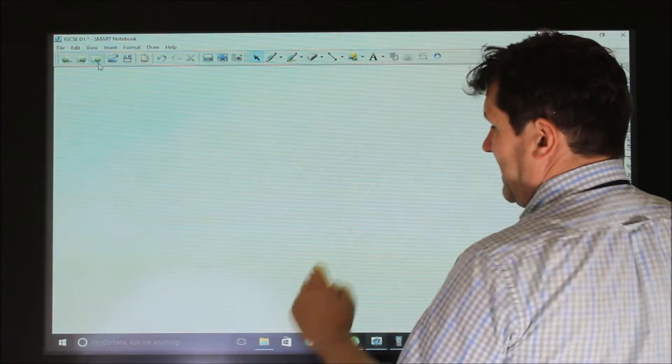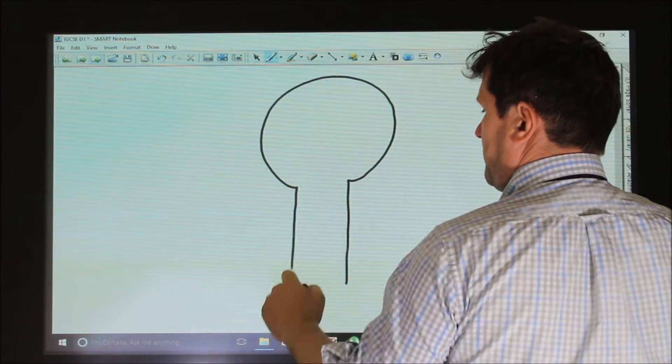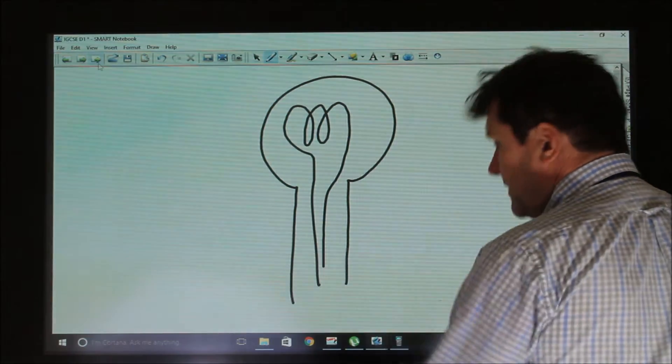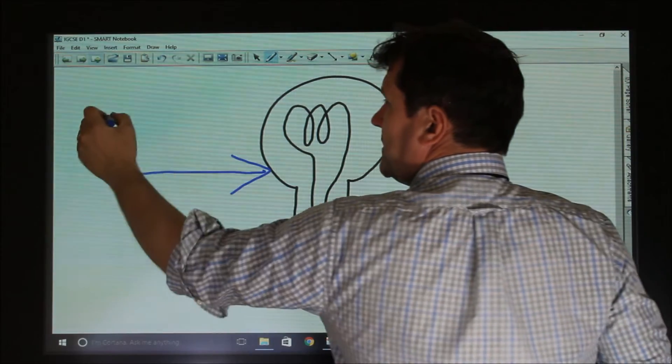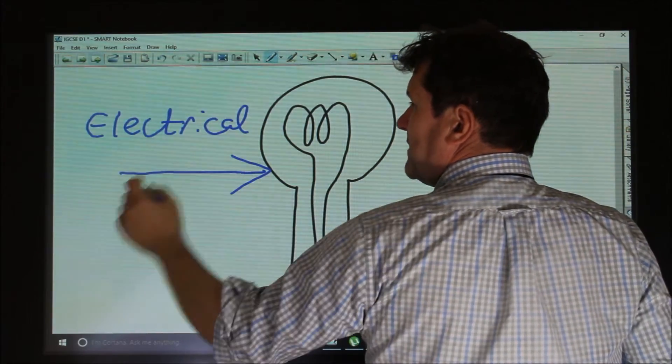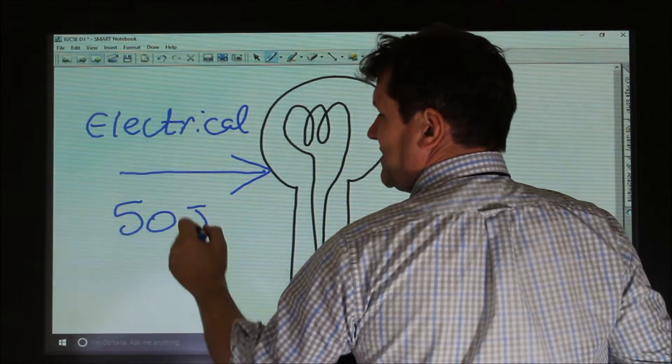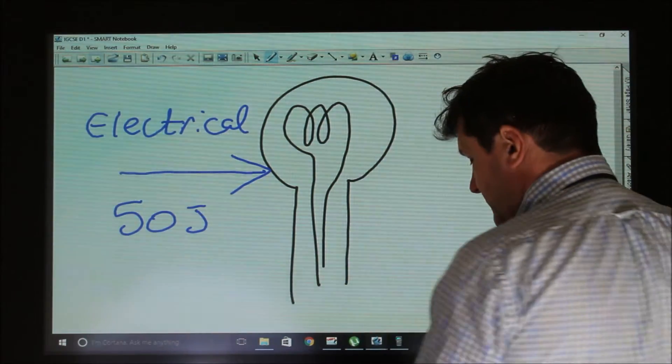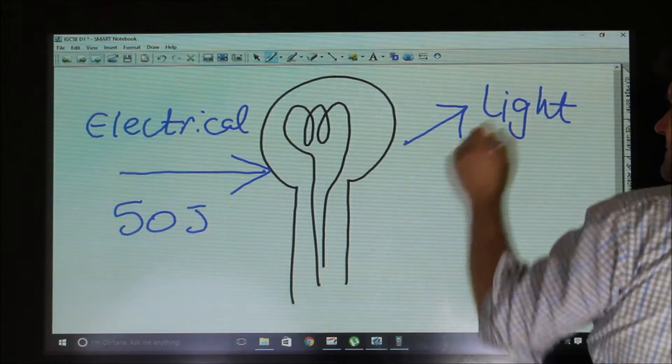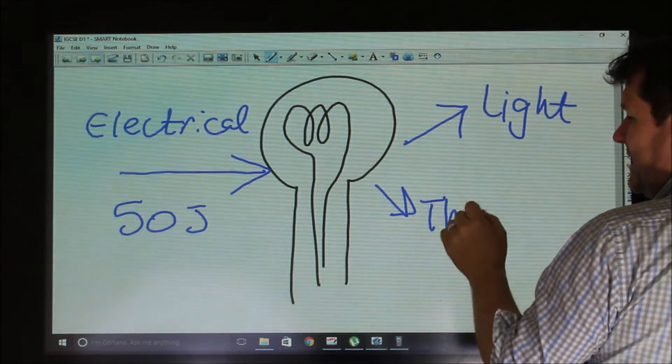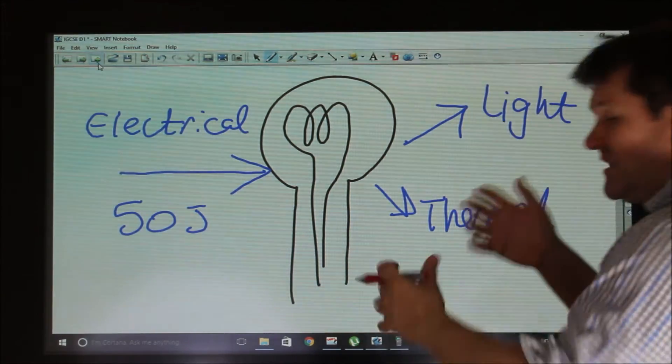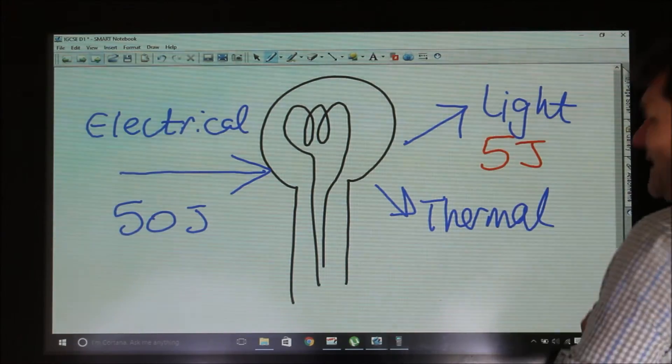So if we go back to the example of a light bulb, if we were to have 50 joules of electrical energy going into our light bulb, and we were to have light and thermal energy, if this produced five joules of light,